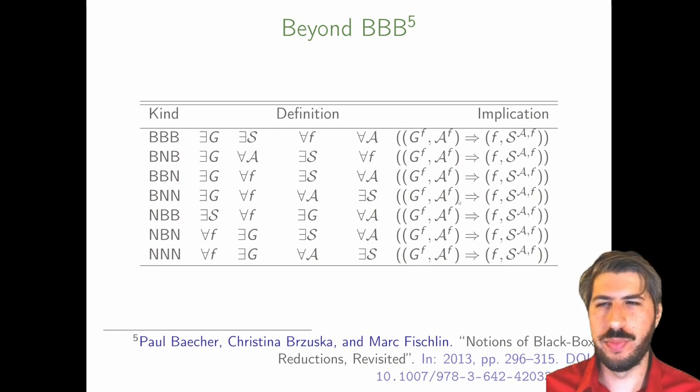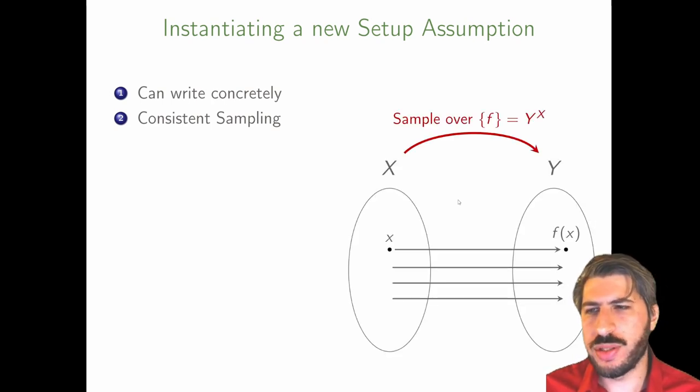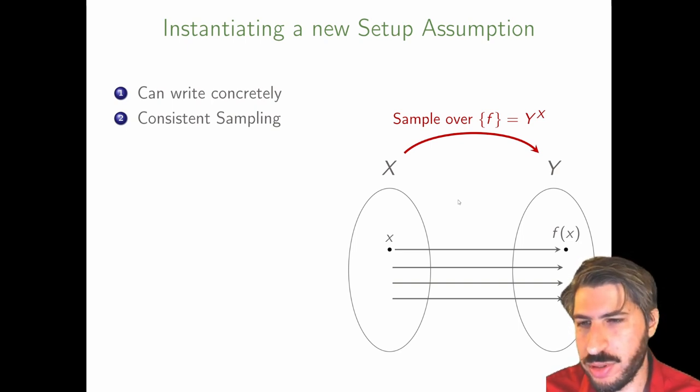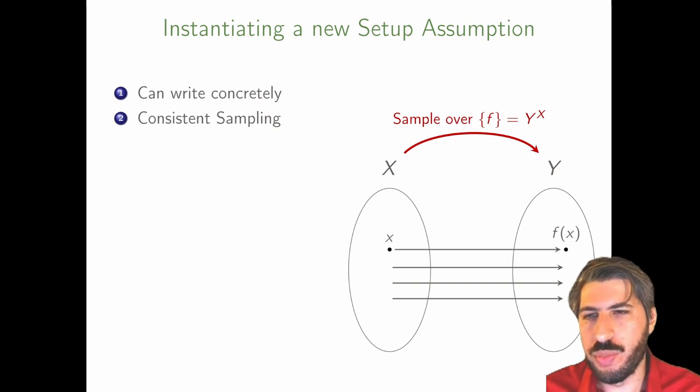How do we define a setup assumption? We need a generic definition that encompasses all established models. We could consider a setup assumption as a construct that samples over all possible functions, say over domain X and codomain Y. We sample with some distribution and we'll generally cover most oracles. However, we do have to consider unbounded adversaries that could query the whole oracle state, and let us consider a random oracle that means an infinite state. That is, X could be infinite.